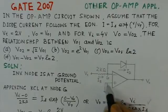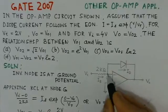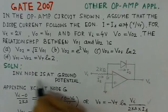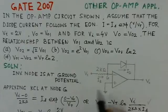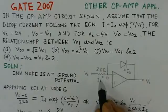Since the diode is ideal and we have the non-inverting terminal grounded, the inverting terminal will also be at the ground potential. Now we apply the KCL at node G here.